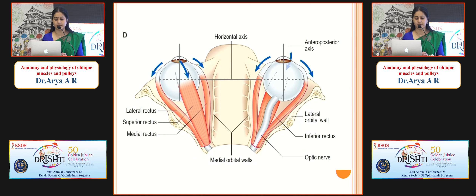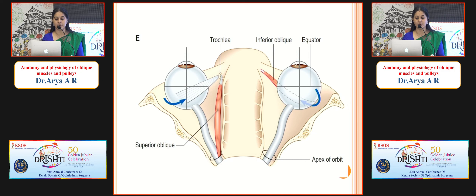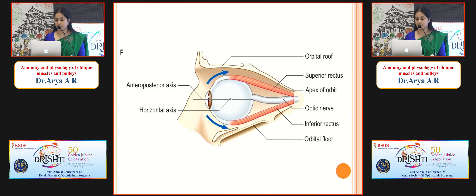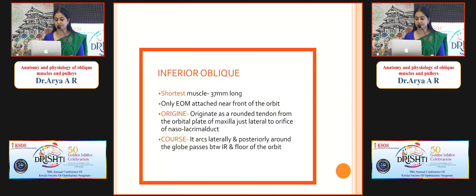In the adducted position, the superior oblique acts as a depressor, and in the abducted position it causes intorsion only. From the superior view, it originates from the body of sphenoid, comes forwards, and once it hooks the trochlea, it turns posterolaterally at an angle of 54 degrees and gets inserted onto the sclera behind the equator.